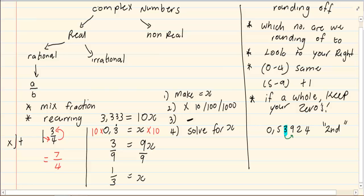9 lies in the category of 5 to 9, which means that we are going to increase the 3 by 1. So our answer is 0.54.